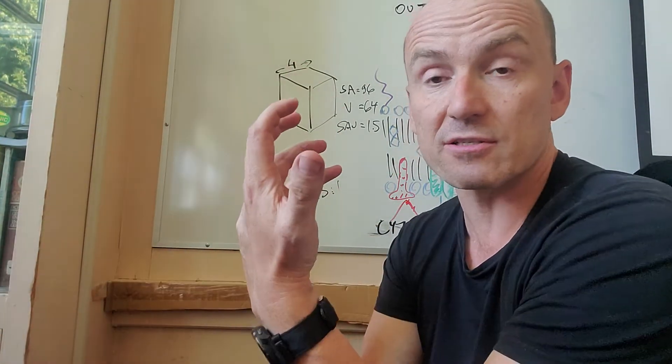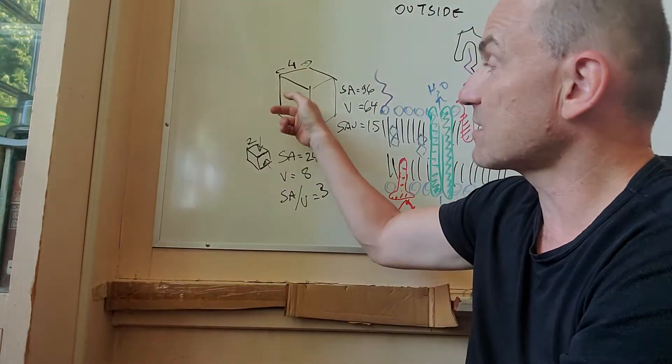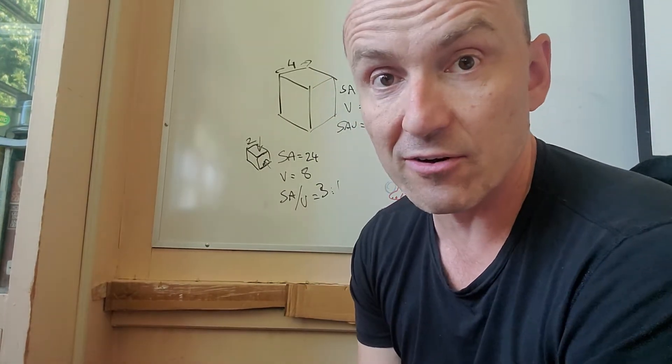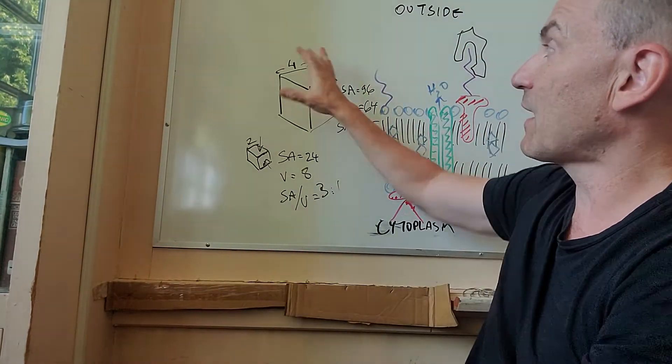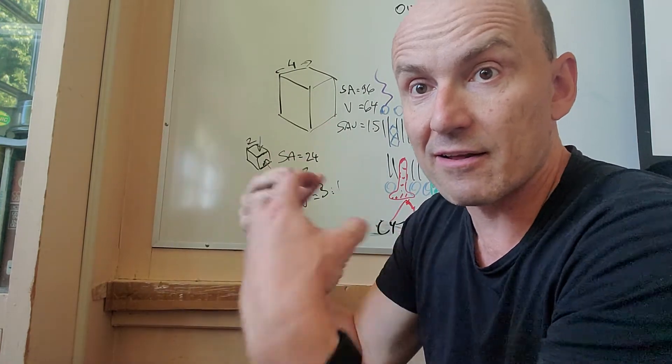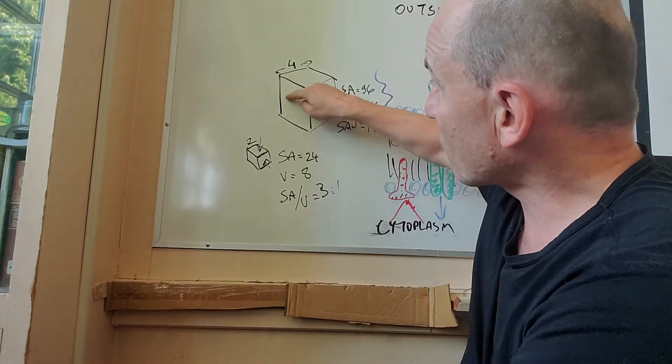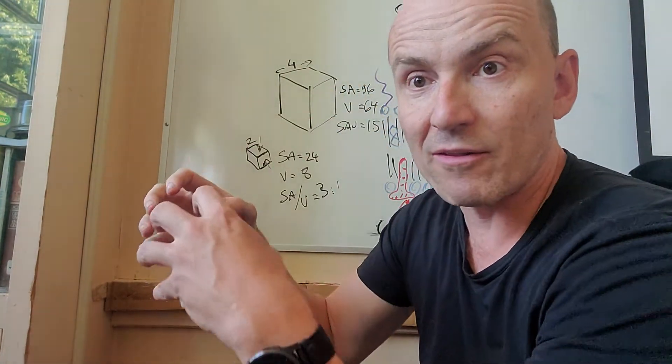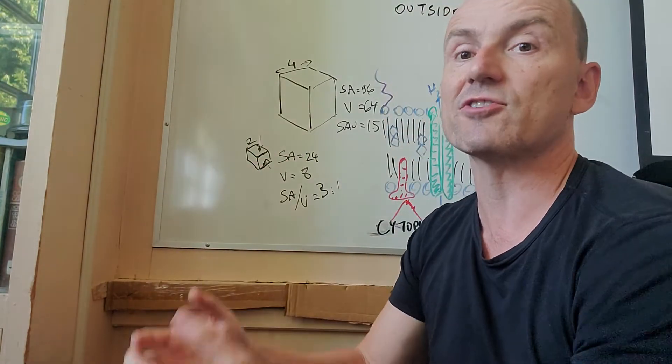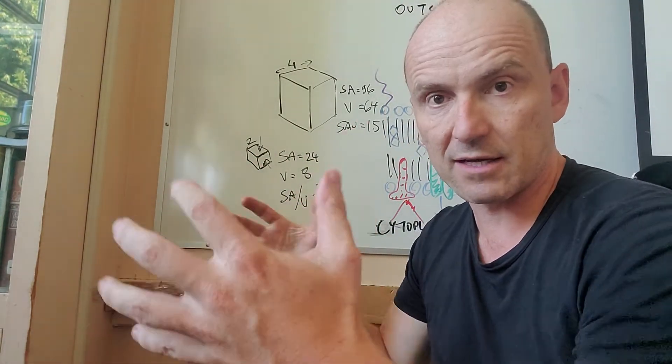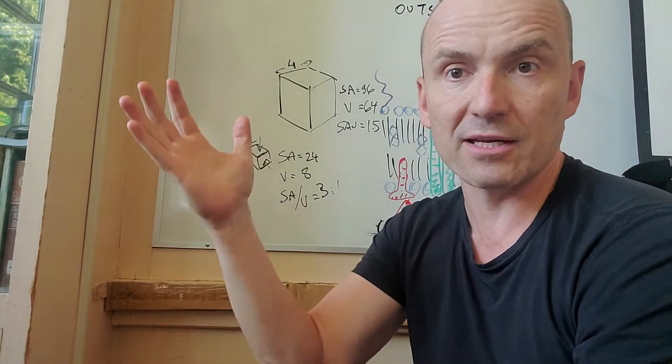Let's say the cell all it did was turn sugar into CO2 and water. Well, at some point, it's just not enough. All the transport proteins would be used up and couldn't move in enough sugar to service that volume if the cell got too big. So metabolism would level off, would stop.